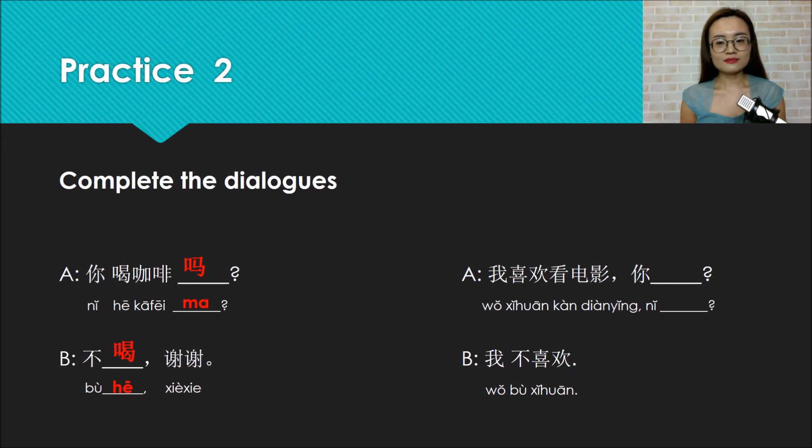Next one: Wo xihuan kan dianying, ni? Wo bu xihuan. Because the answer is I don't like, so the question should be how about you, right? So how to express how about in Chinese? Yes, ne. Wo xihuan kan dianying, ni ne? I like watching movies, how about you? Wo bu xihuan. I don't like it.